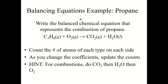Let's walk through a couple of examples. Starting with propane: this equation represents the combustion of propane — propane plus oxygen gas forming carbon dioxide gas and water. Start by counting the number of atoms of each type on each side. For combustion reactions, I recommend starting with CO2, then water, then finishing with oxygen gas. Start with compounds that have multiple types of atoms, and end with the molecule that has just one type.